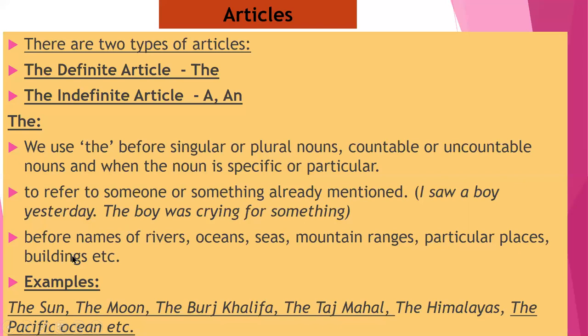We also use 'the' before names of rivers, oceans, seas, mountain ranges, particular places, or buildings. Apart from these, we use 'the' with superlative adjectives — for example, 'the most intelligent girl'. So with superlative adjectives we also use 'the'.